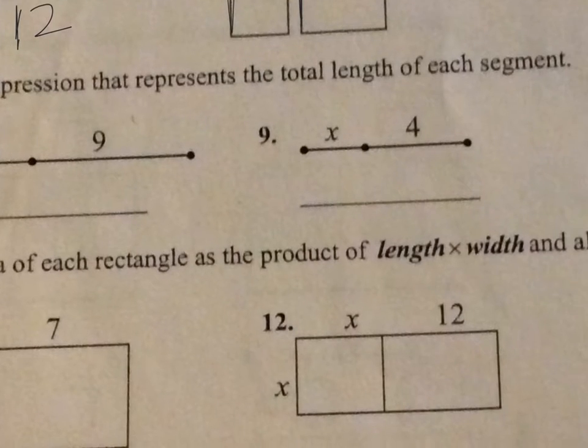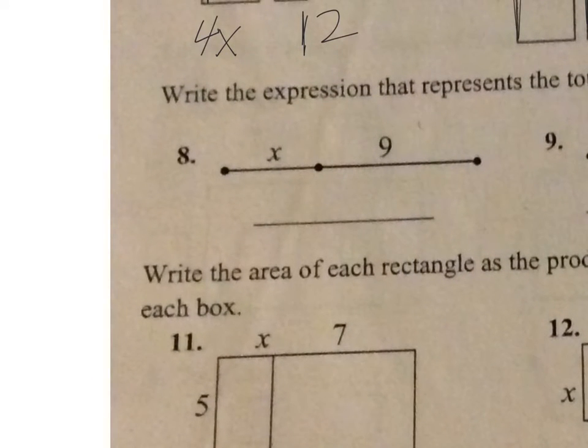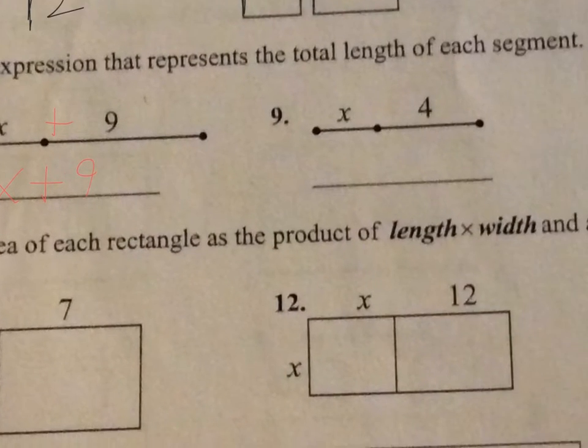And it says, write the expression that represents the total length of each segment. So in this case, I have x and 9. So the total length would be x plus 9. That's the total length of the line. If x is 5, it's 5 plus 9. If x is 7, it's 7 plus 9.